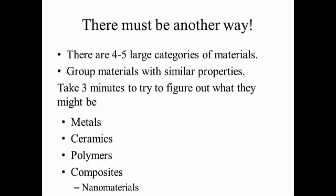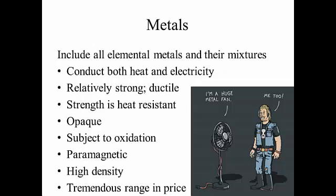Metals include all the elemental metals — look at the periodic table; all the metals to the left of the band line are metals. Anything you mix them together in proportions is also called a metal. When you mix two metals together they're called alloys — that's just a name for metallic mixtures. In general, metals are considered to be good heat and electricity conductors, they are strong and ductile, and they maintain good strength over a wide variety of temperatures.